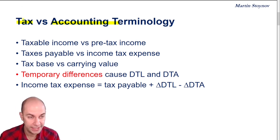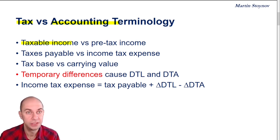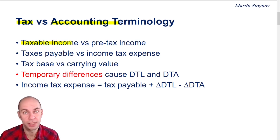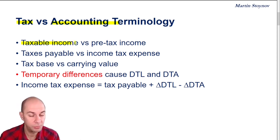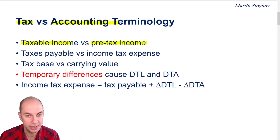Let's take the tax report as an example. We have the concept of taxable income — this is the income after tax deductible expenses on which we apply our tax rate in order to know how much tax we have to pay. The corresponding item in the accounting report would be known as earnings before tax (EBT), or PBT — profit before tax — or pre-tax income. This is just an accrual concept on the P&L.